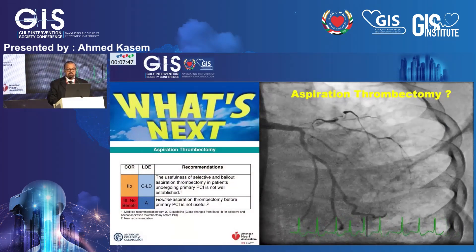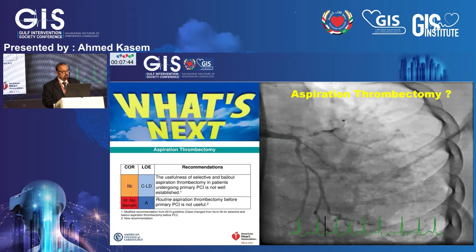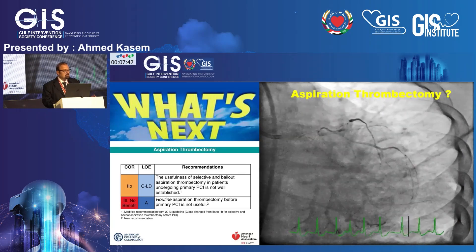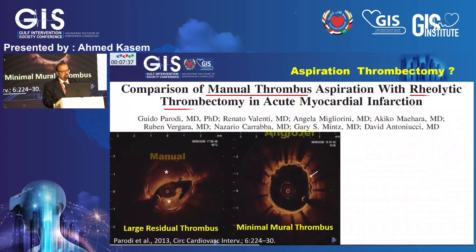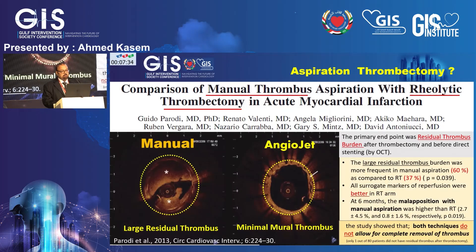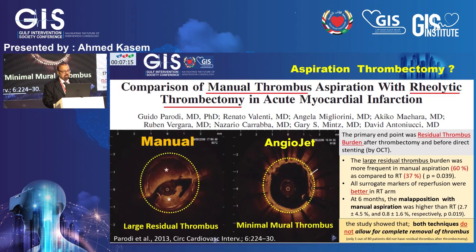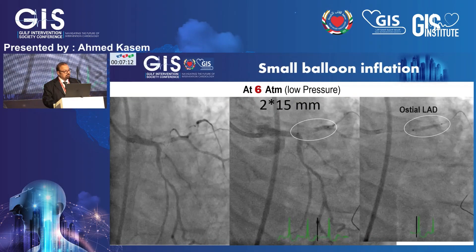The question at that time: shall I go for aspiration thrombectomy? The answer — as we all know from the guidelines — is a class 3 recommendation. OCT studies comparing rheolytic therapy with angio-jet versus manual aspiration showed more than 60% residual large thrombus with manual aspiration, and 37% residual thrombus after angio-jet. These techniques do not allow complete removal of thrombus, so I decided not to use manual aspiration.